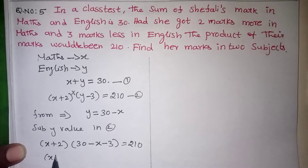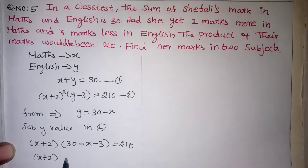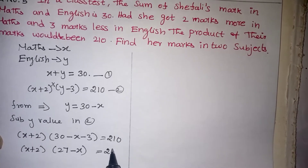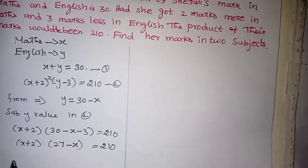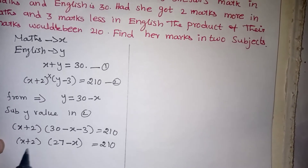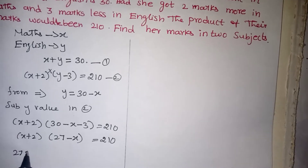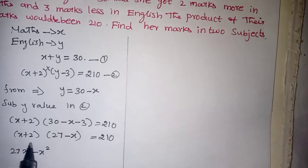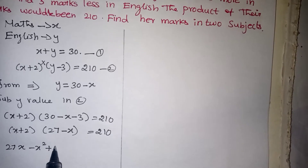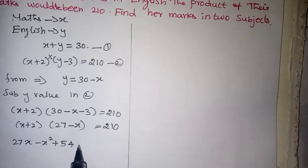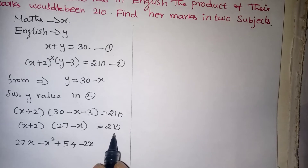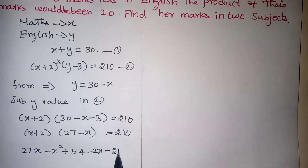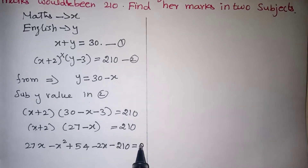Now X plus 2 and 30 minus 3 gives 27 minus X, which equals 210. We are going to multiply now: X into 27 gives 27X, X into X gives X squared, plus 2 into 27 gives plus 54, and 2 into minus X gives minus 2X, which equals 210. Bringing 210 to this side gives minus 210, which equals 0.